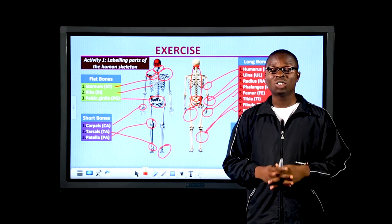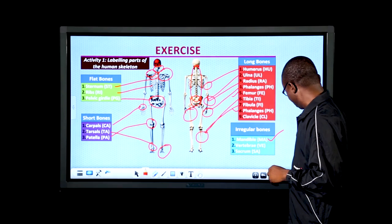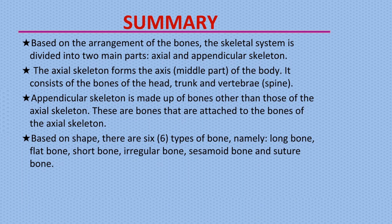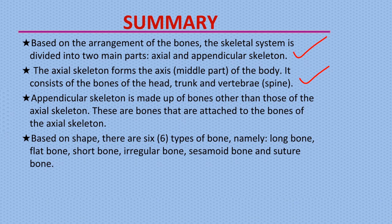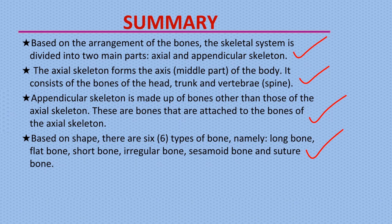We've come to the end of this class. Let's take a quick summary. First, based on the arrangement of bones, the skeletal system is divided into two main parts: the axial and the appendicular skeleton. The axial skeleton forms the axis — the middle part of the body — consisting of bones of the head, trunk, and vertebrae. The appendicular skeleton is made up of bones attached to the axial skeleton. Finally, based on shape, there are six types of bone: long, flat, short, irregular, sesamoid, and sutural bones.